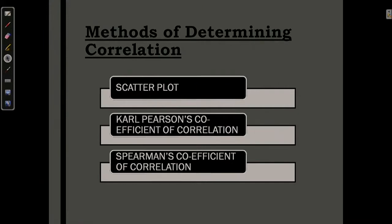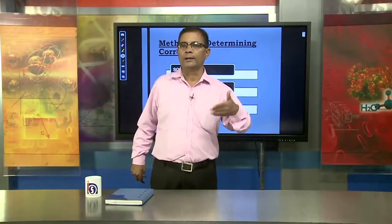Clear? There are three methods — we can show one in a graphical way. Karl Pearson suggested how to calculate the relationship between two variables, and Spearman's rank correlation is another method that calculates correlation on the basis of ranking.